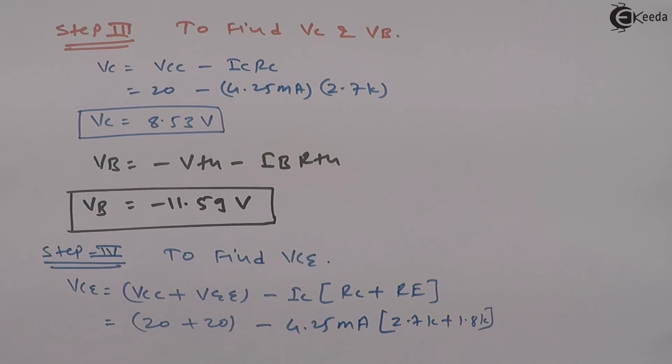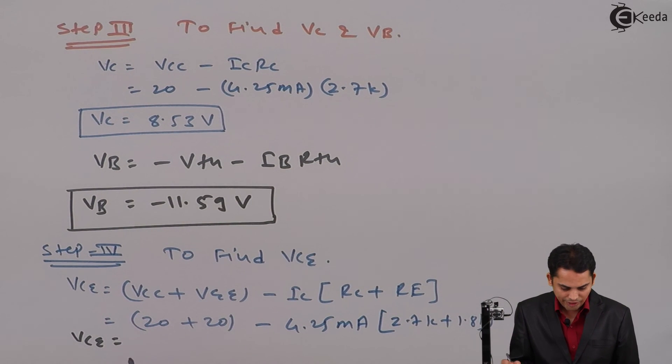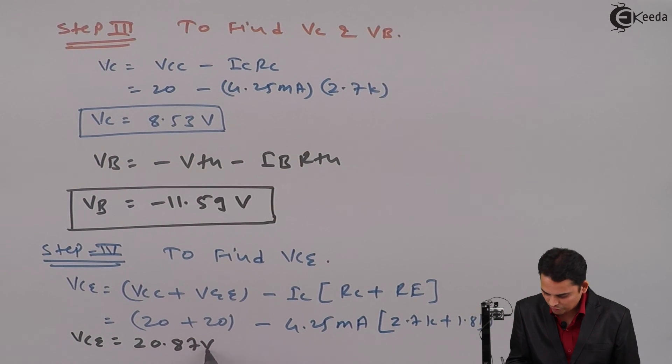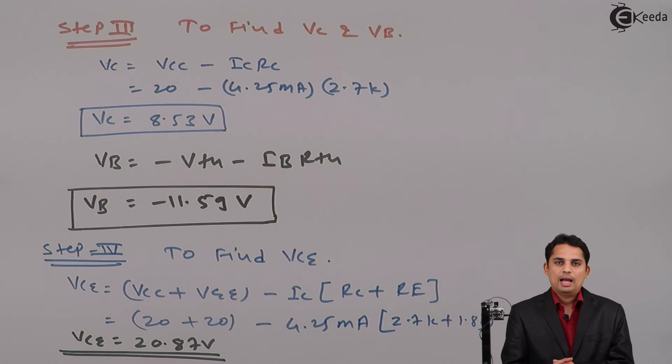If we solve this, value of VCE is equal to 20.87 volts. So we have calculated IB, IC, VCE as well as VC and VB as asked in the problem. Thank you.